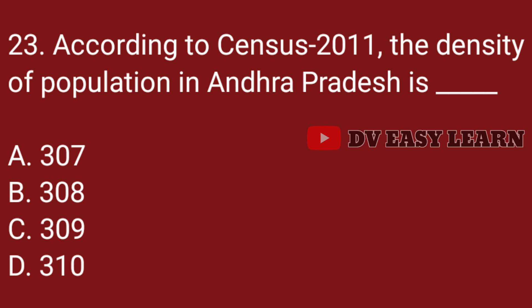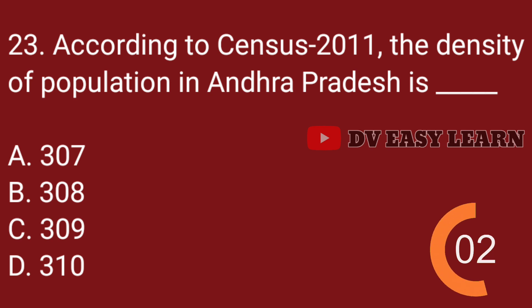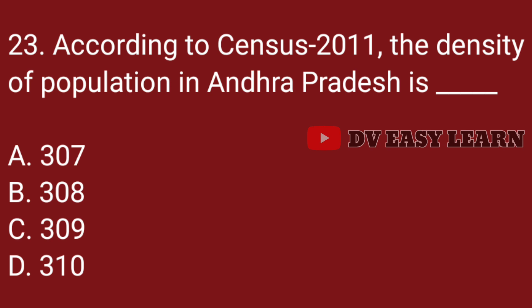Question no. 23. According to census 2011, the density of population in Andhra Pradesh is: Correct answer: 309.